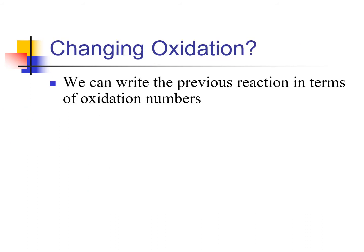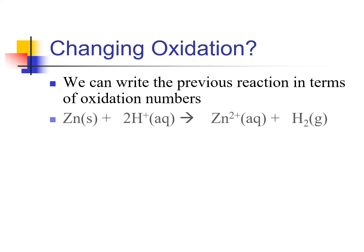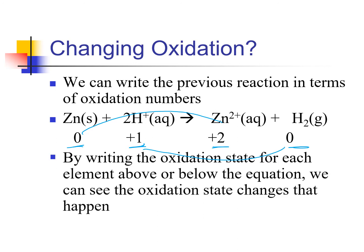We can write the previous reaction in terms of oxidation numbers. Zinc by itself, and things in their elemental form, will always be zero — that's why zinc here is zero and hydrogen here is zero. Things that are ions, whatever their charge is, is their oxidation number. So hydrogen is plus one and zinc is plus two. We can clearly see oxidation numbers changing, confirming it is a redox reaction.